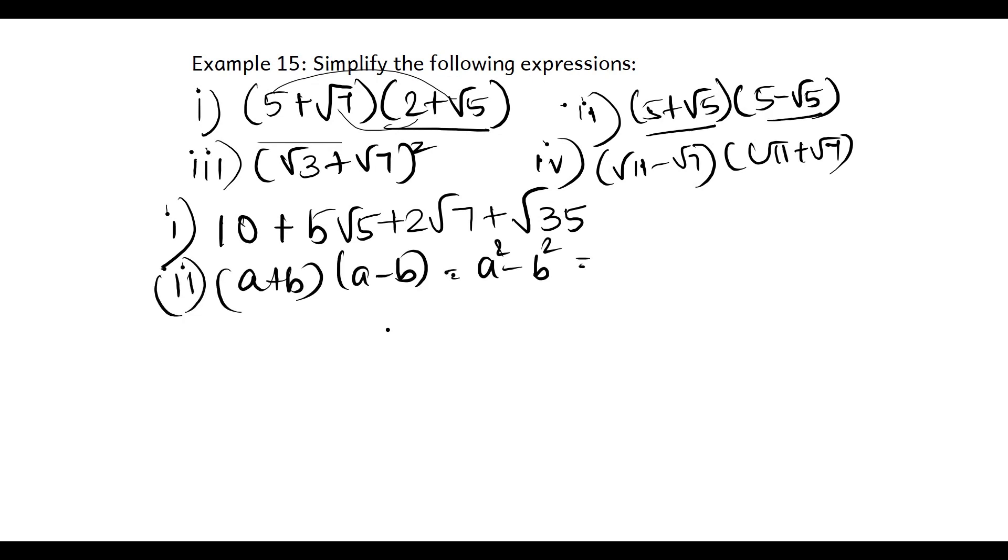Part ii: 5 plus root 5 into 5 minus root 5. This is like a plus b into a minus b. The result is a square minus b square. So 5 square minus root 5 the whole square. 5 square is 25, root 5 into root 5 is 5, so 25 minus 5 is 20.